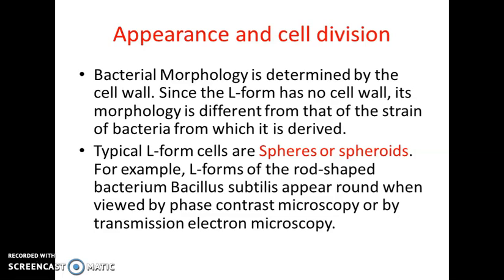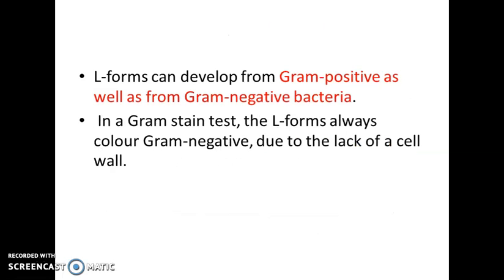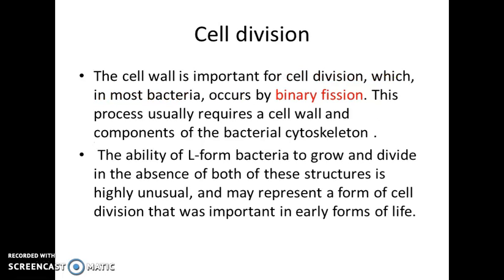Typical L form cells are spheres or spheroids. For example, L forms of the rod-shaped bacteria Bacillus subtilis appear round in shape when viewed under phase contrast microscopy or by transmission electron microscopy. L forms can develop from either gram-positive or gram-negative bacteria, and when gram stained they always appear gram-negative due to the lack of cell wall.